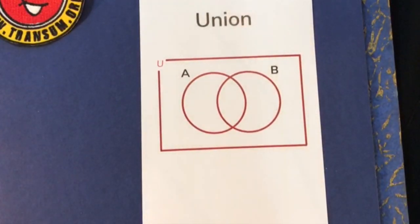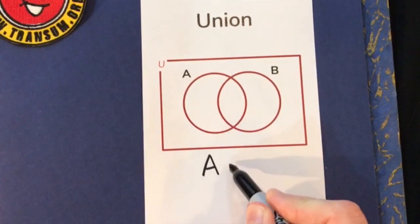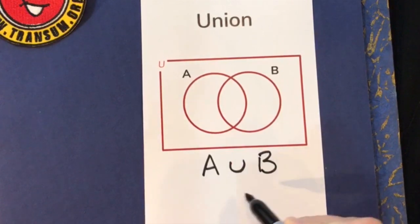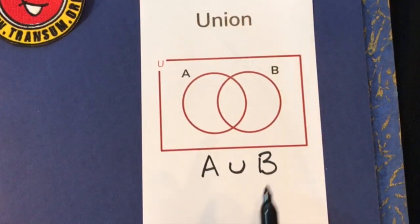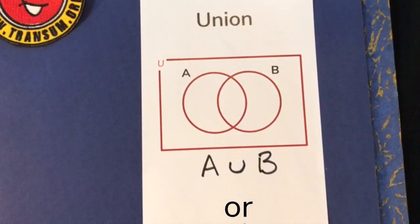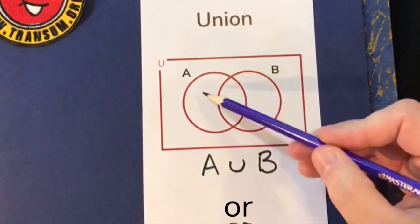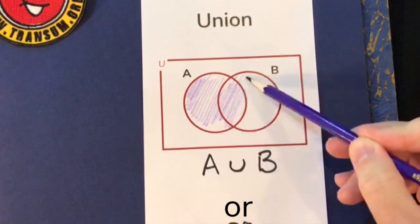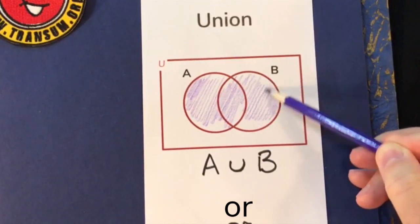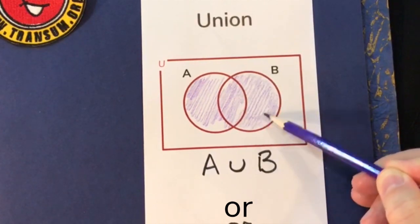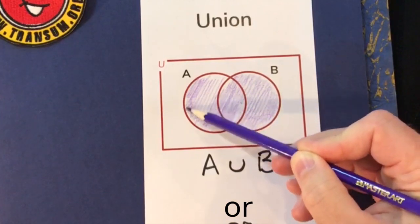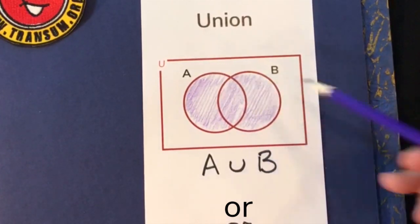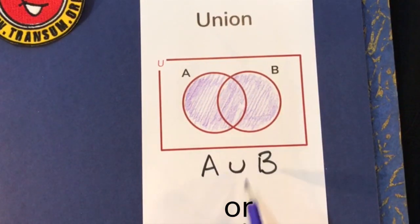The next one to know is called union, written with a cup symbol — the upside-down version of the cap. It means 'or'. So you colour in everything that's in A or B: the bits in A, the bits in both, and the bits in B. That's called the union — the cup notation means 'or'.